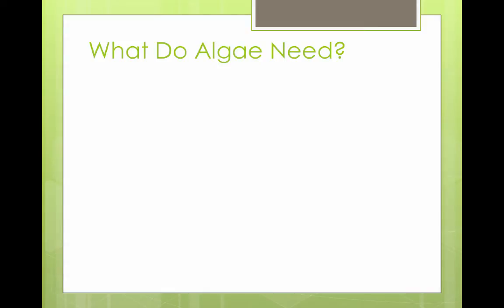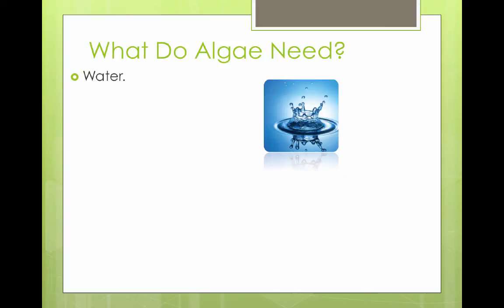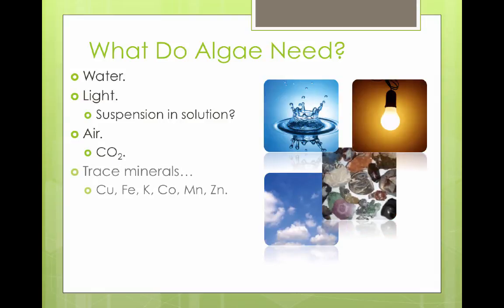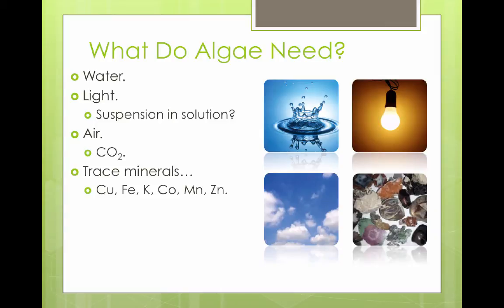What is it that algae need? We need to supply them with the best growing environment, so we need to understand what they need. First, they need water — without it they dry up and die. They need light for energy, and suspension in a solution gives them optimal access to light. They need CO2 from air, and they need trace minerals and nutrients that we'll provide with a fertilizer. They also need to avoid clumping together, which would reduce their access to light and CO2, and they need to avoid the toxins that build up as part of their life cycle.